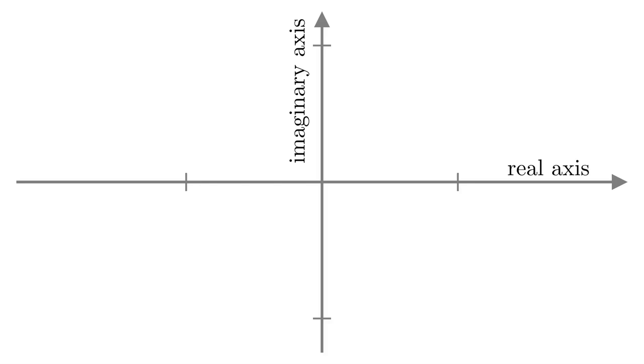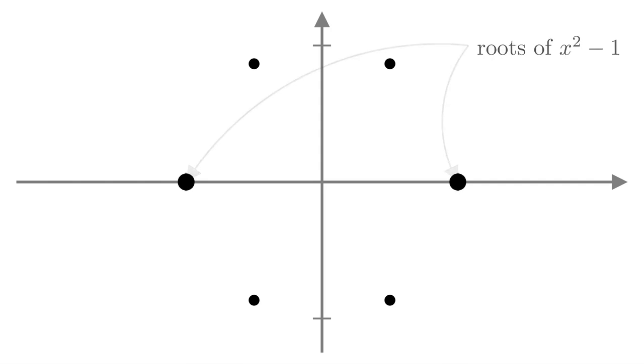Here's the complex plane with the real axis and the imaginary axis. These six dots are the six roots of the polynomial x to the 6 minus 1. The roots of x squared minus 1 are plus or minus 1, and they're also roots of x to the 6 minus 1. We've also got the roots of x cubed minus 1, which are also roots of x to the 6 minus 1.